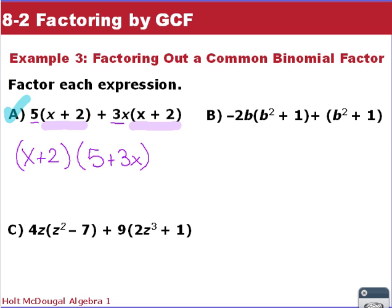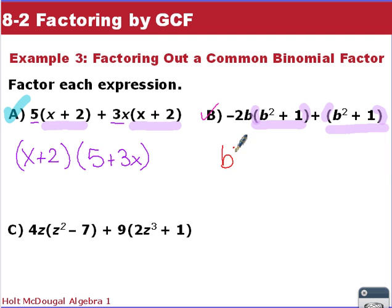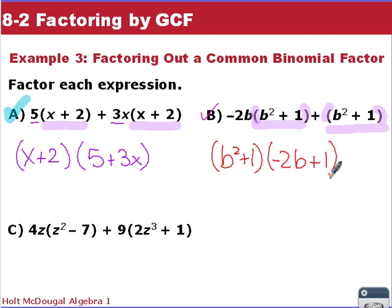For example B, we again identify a repeated binomial — (b² + 1) — as the common factor. Factoring it out leaves (b² + 1) times (negative 2b + 1). We need the placeholder plus 1 because it's really 1 times (b² + 1); without it we'd be missing a term.